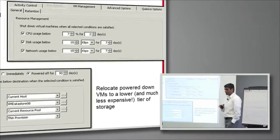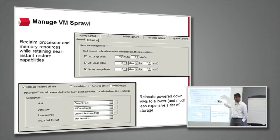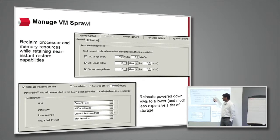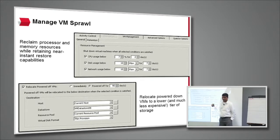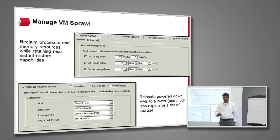Here's the criteria. The criteria for powering down a VM is: if the CPU usage is below X percent for so many days — not just drops below once, but has been consistently below that threshold for X number of days — and the disk usage has been consistently below threshold for X number of days, then we go in and manage that VM for archive processing.